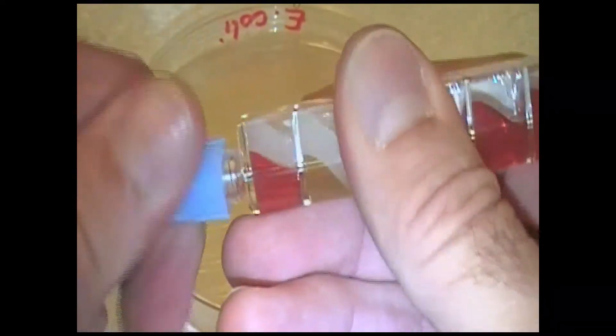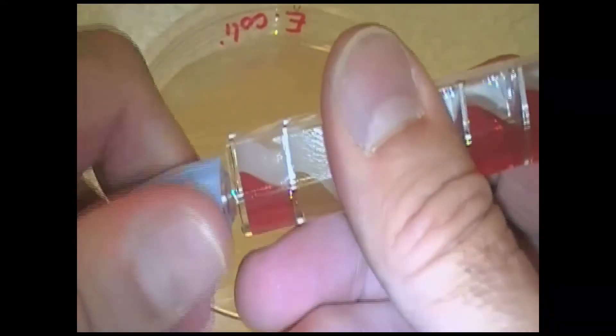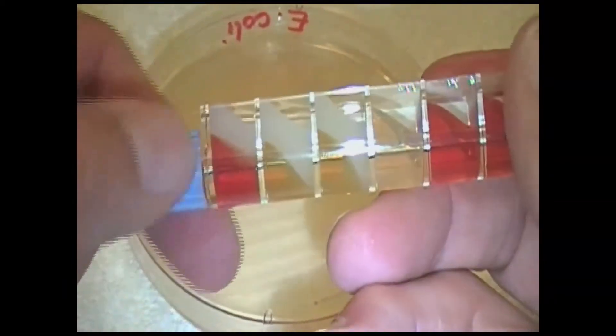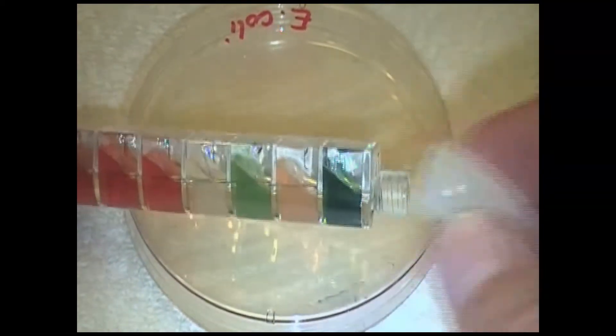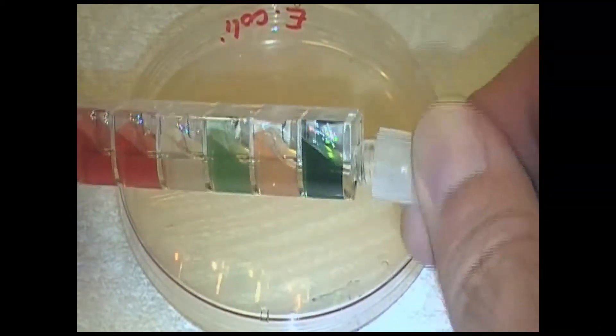at that point you come back and you put the blue closure on this end, and remember the blue closure always goes near the wax layer. Then we're going to take the white closure, and we're going to put the white closure on the other end.